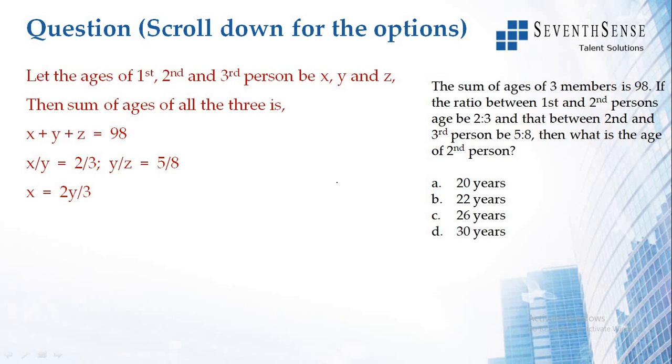Cross multiply to find the value of x. X equals 2y by 3. We need to simplify for y because y is the common factor on both sides. From the second equation, y by z equals 5 by 8, so z equals 8y by 5.